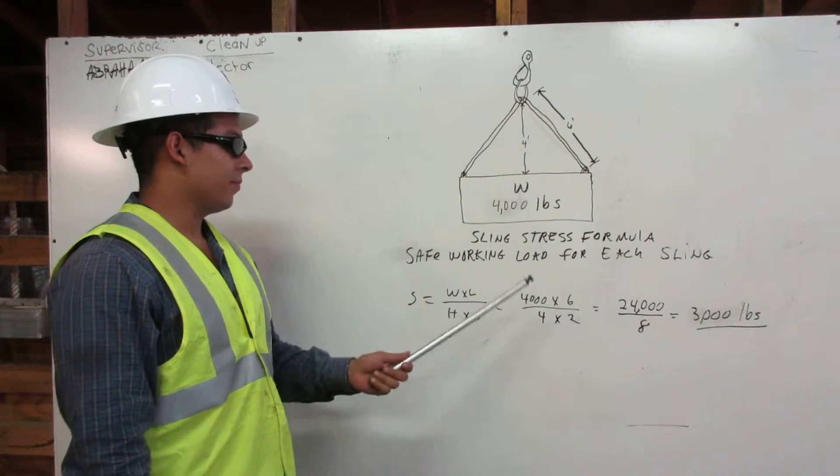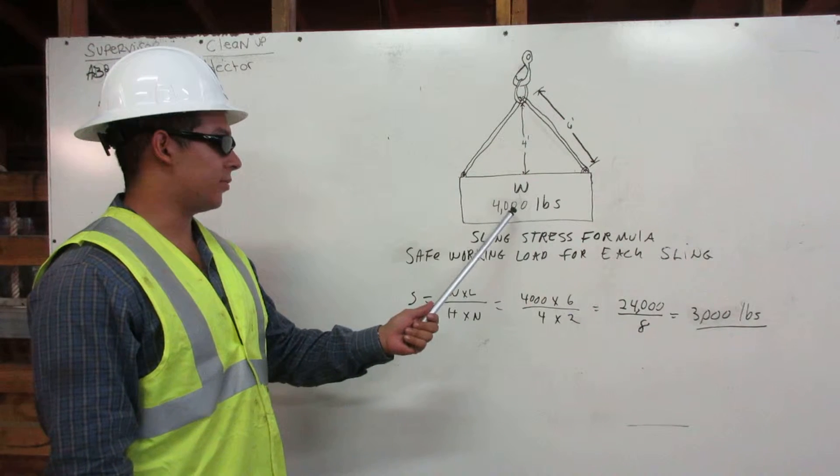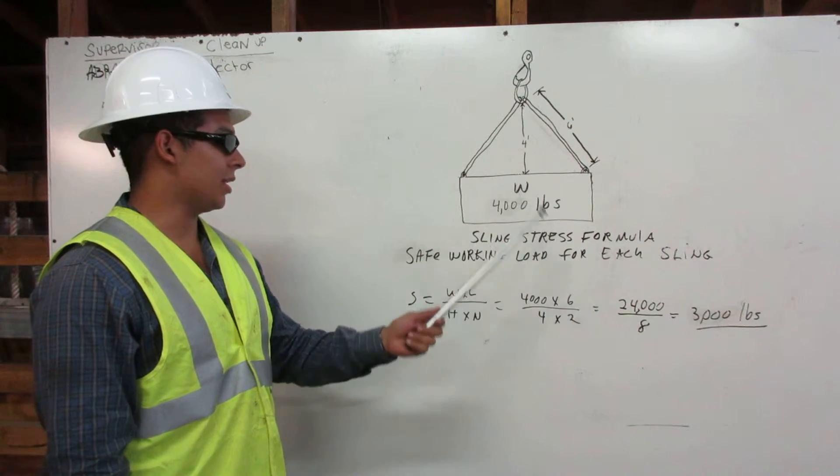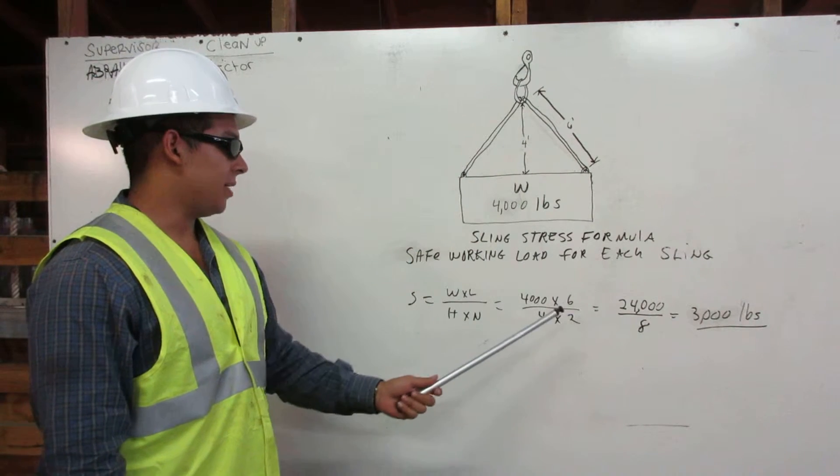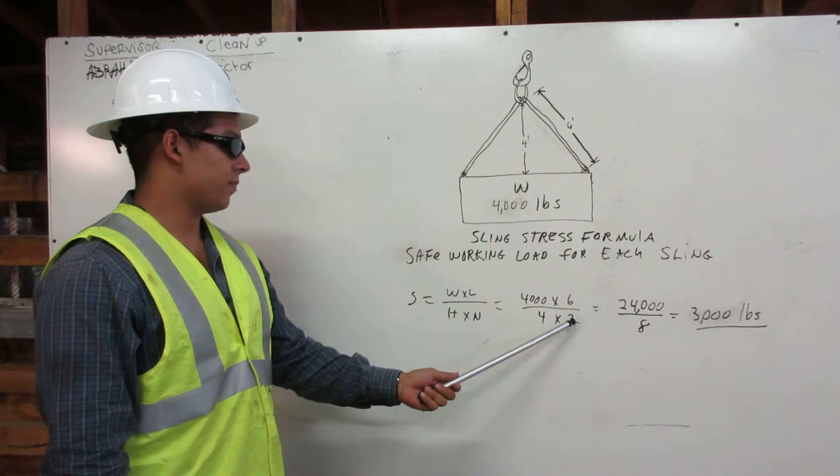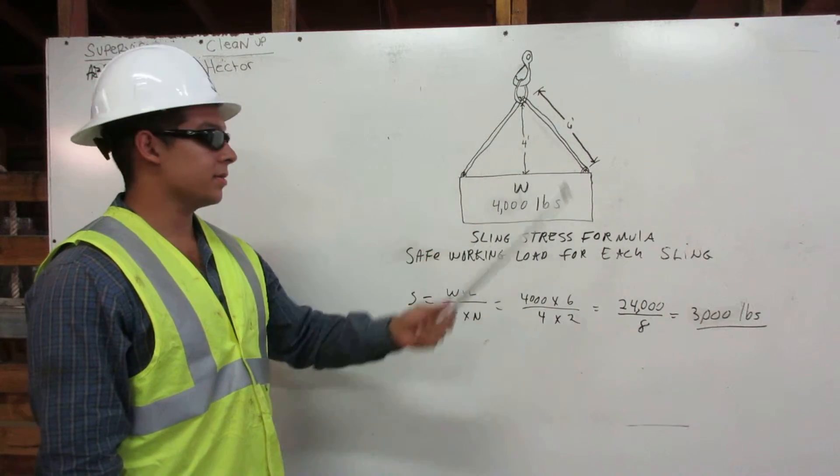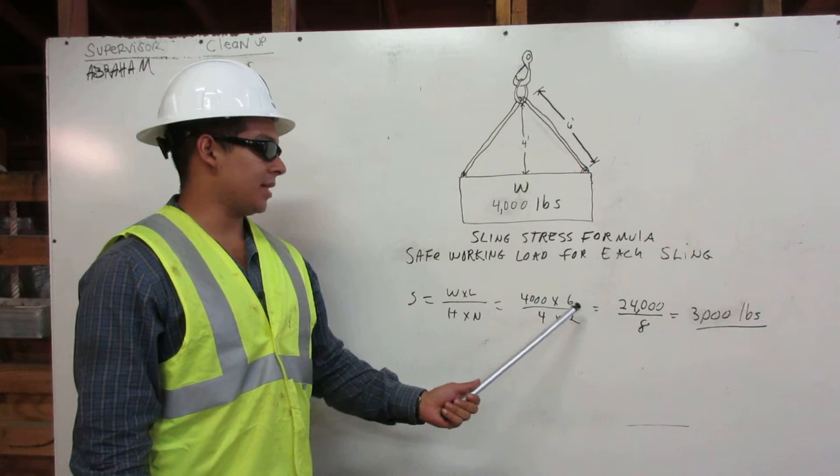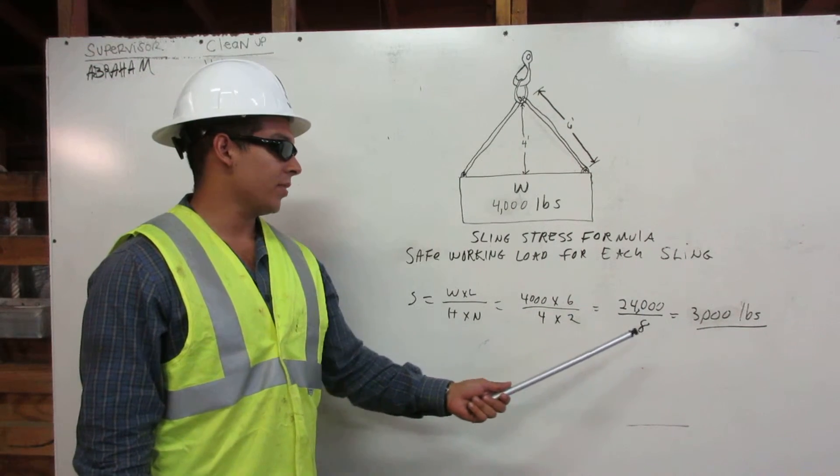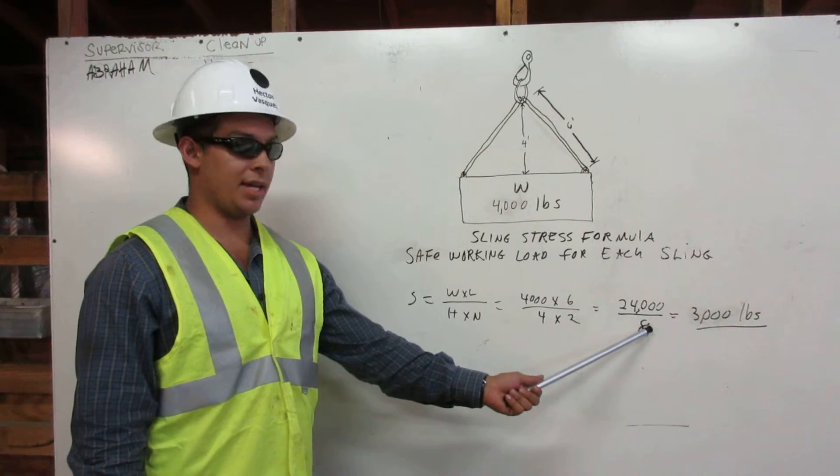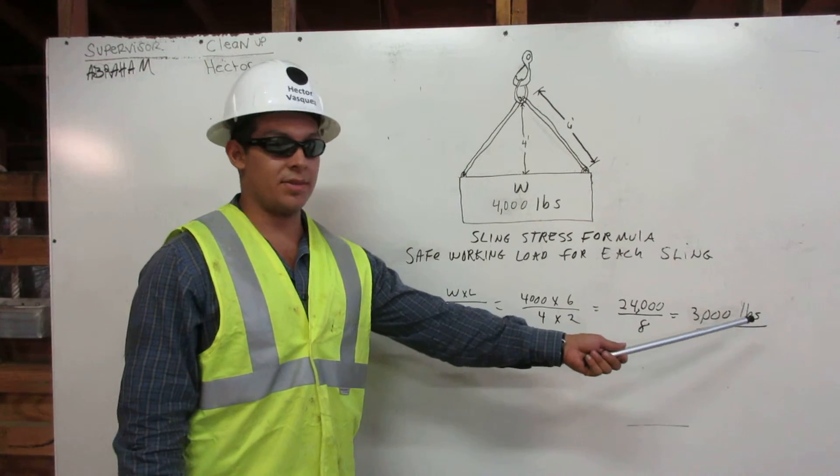So in our example here, our weight is 4,000 pounds. So 4,000 times 6, which is our length, divided by 4, which is our height, times 2, which is the number of slings. Equals 4,000 times 6 equals 24,000, divided by 4 times 2 equals 8, equals 3,000 pounds.